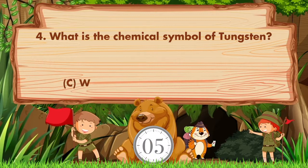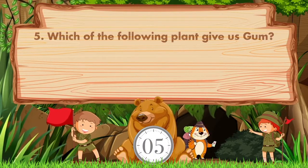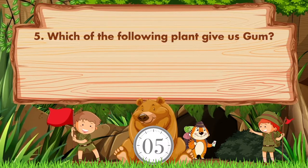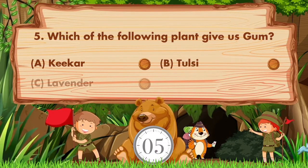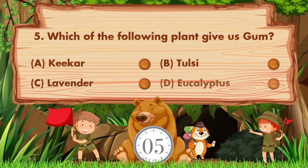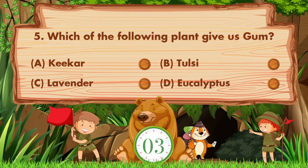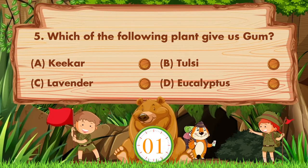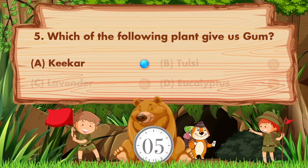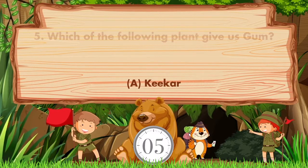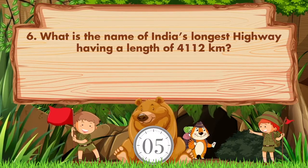What is the chemical symbol of Tungsten? Option A: F, B: B, C: W, D: V. Answer is option C, W. Which of the following plants gives us gum? Option A: Keeker, B: Tulsi, C: Lavender, D: Eucalyptus.